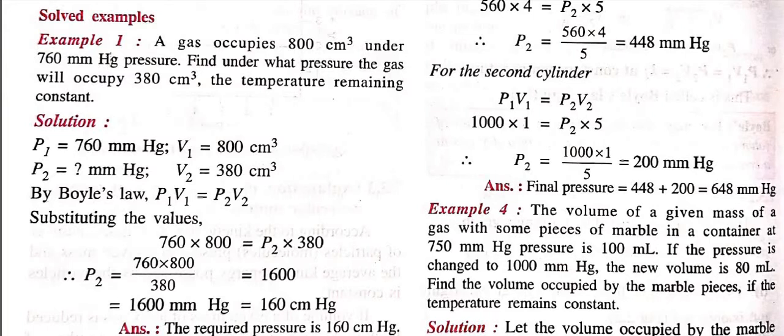So, the question is, example 1: a gas occupies 800 cm³ under 760 mmHg pressure. Find out what pressure the gas will occupy 380 cm³, the temperature remaining constant. So this is the question, now how to solve this question.